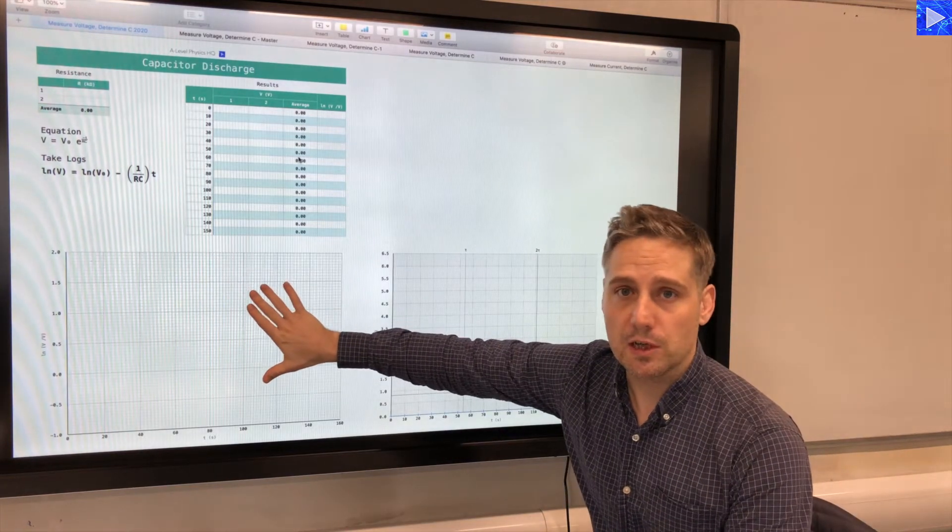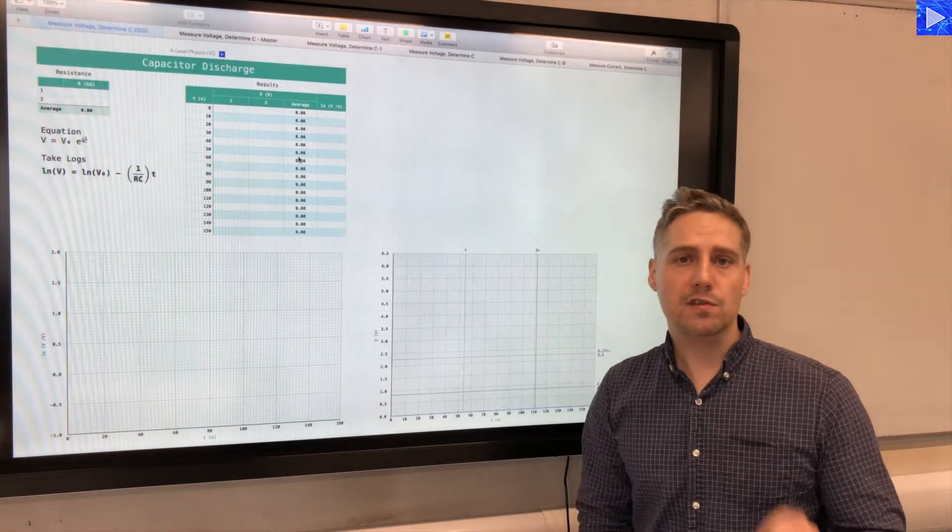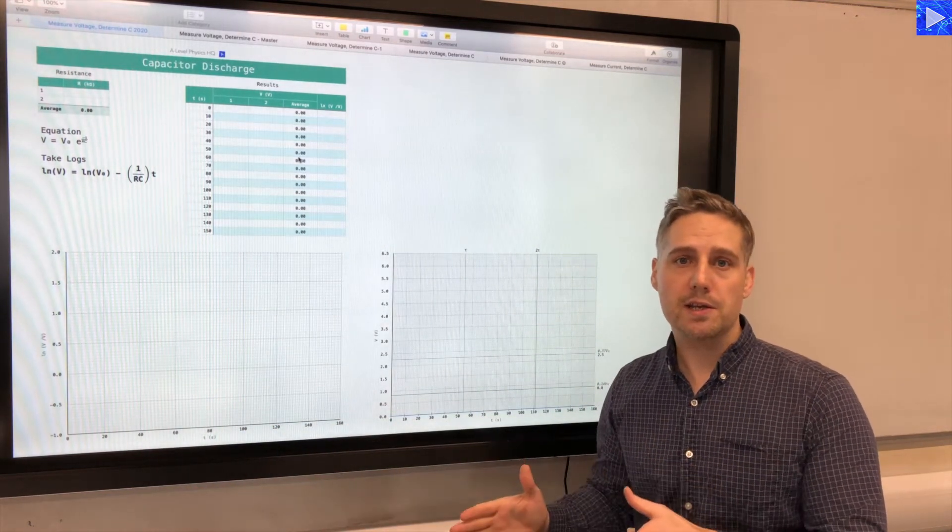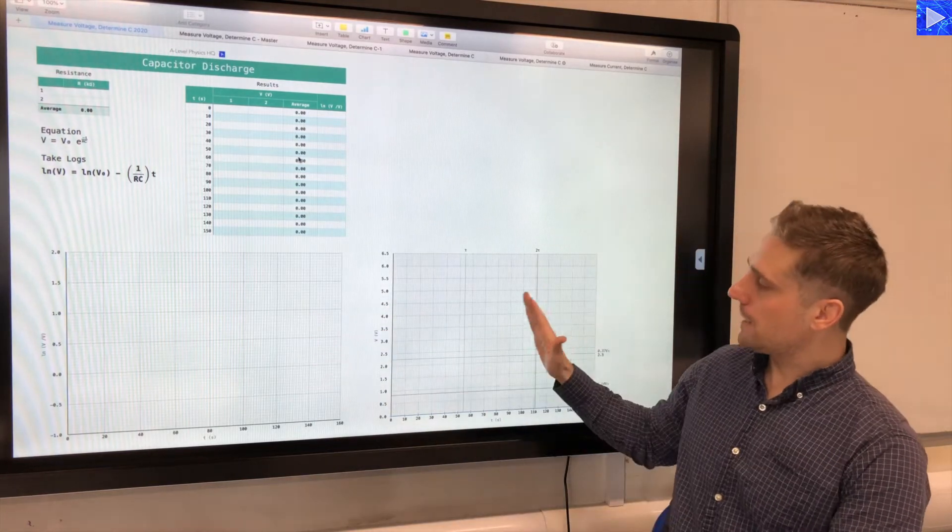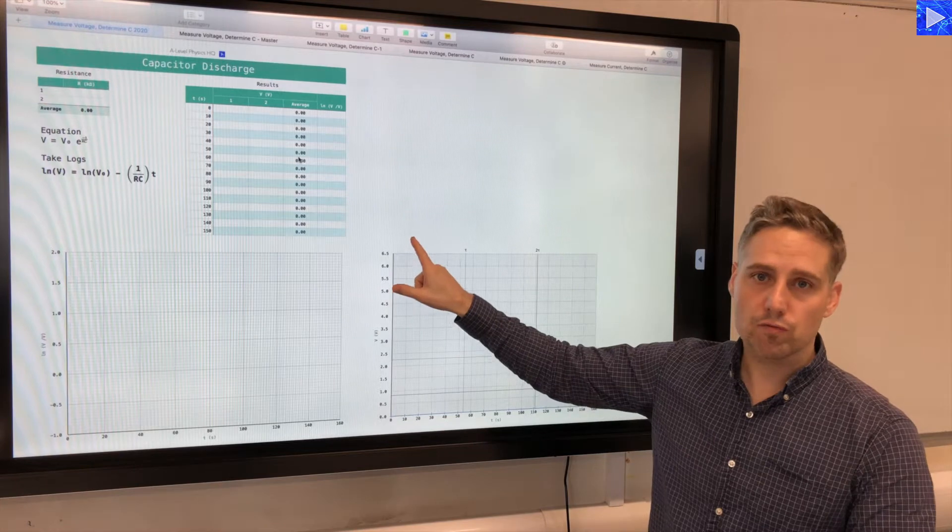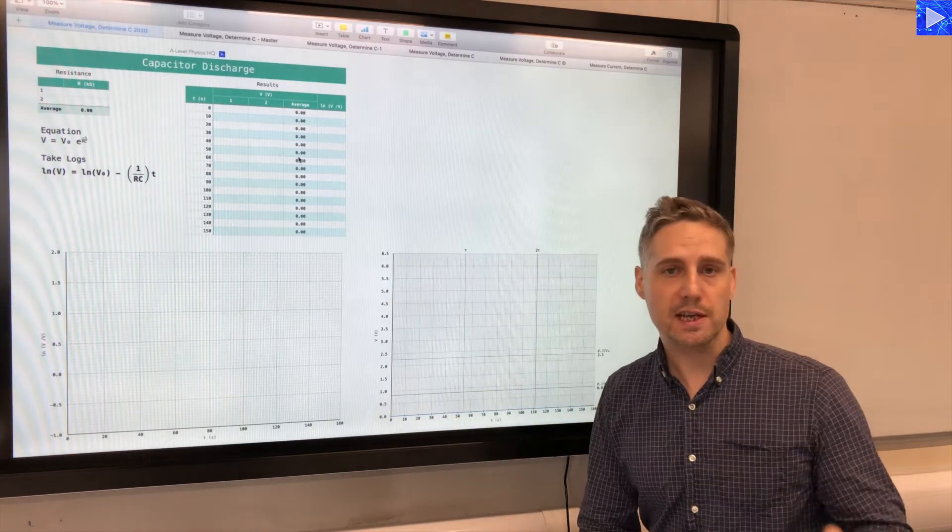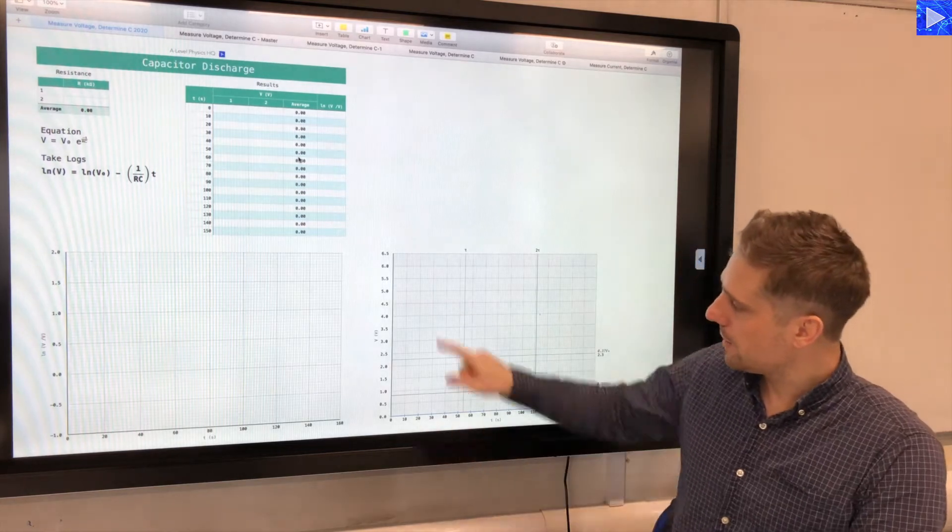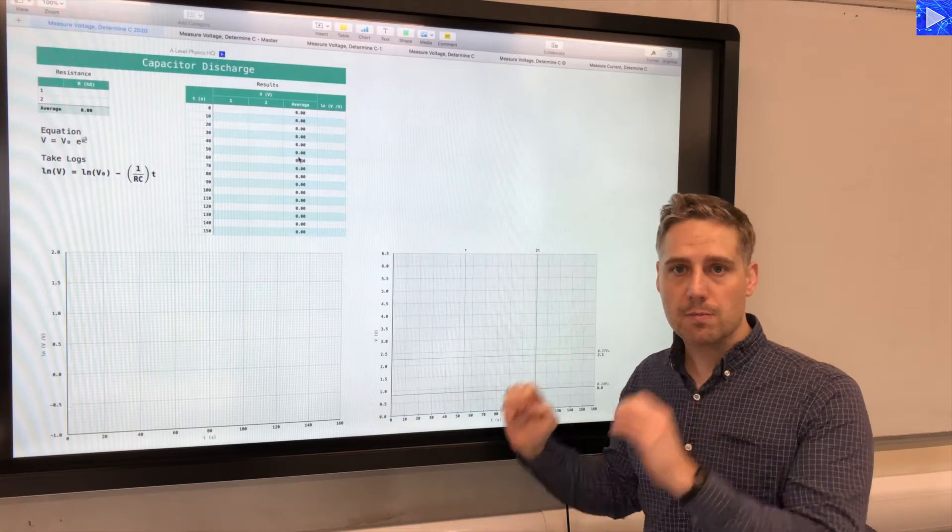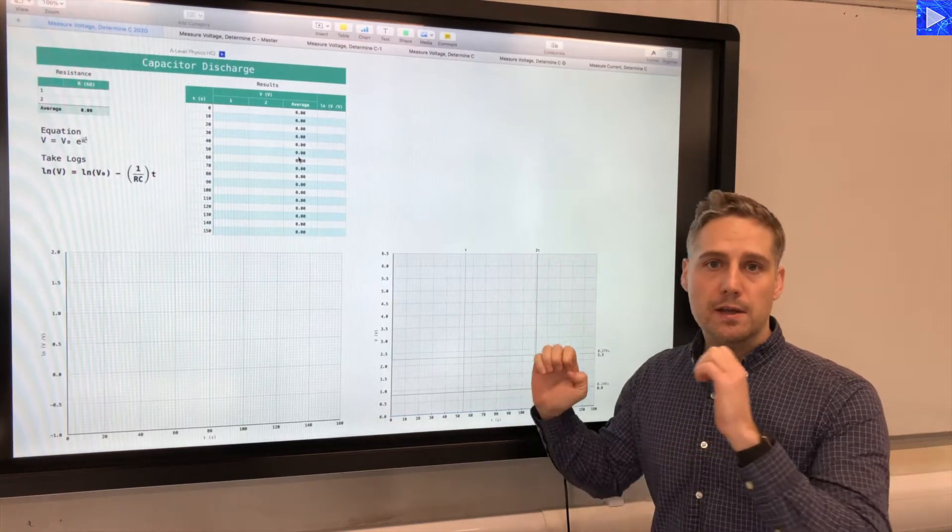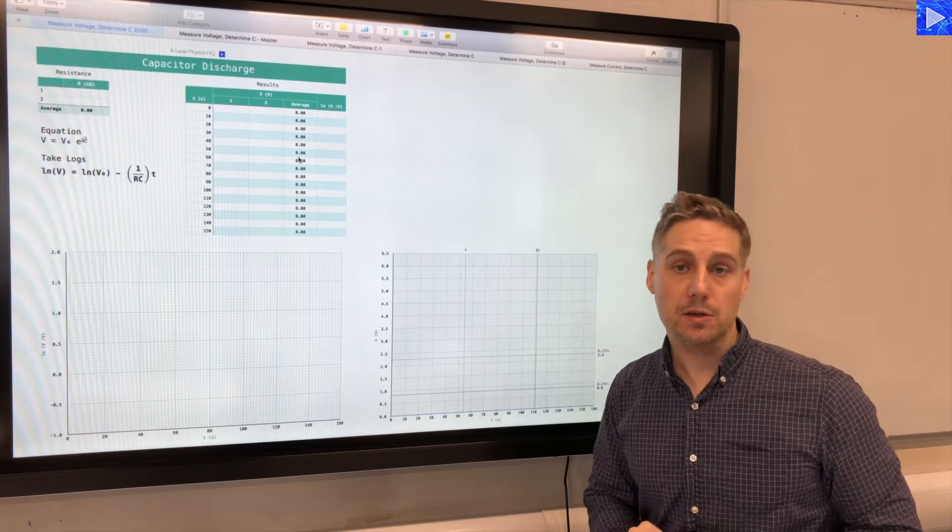The first method is using a log graph, the log of the potential difference versus time. That gives us a straight line. We can use the gradient to determine the capacitance. And then the second method, this is the raw potential difference readings versus time. That will give us an exponential discharge graph, so we'll see an exponential curve here. And we'll be measuring the time constant from the graph in two places and using that to calculate the unknown capacitance.